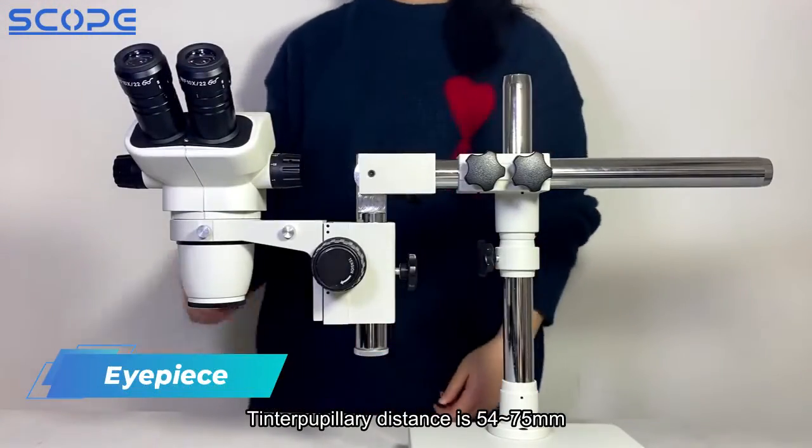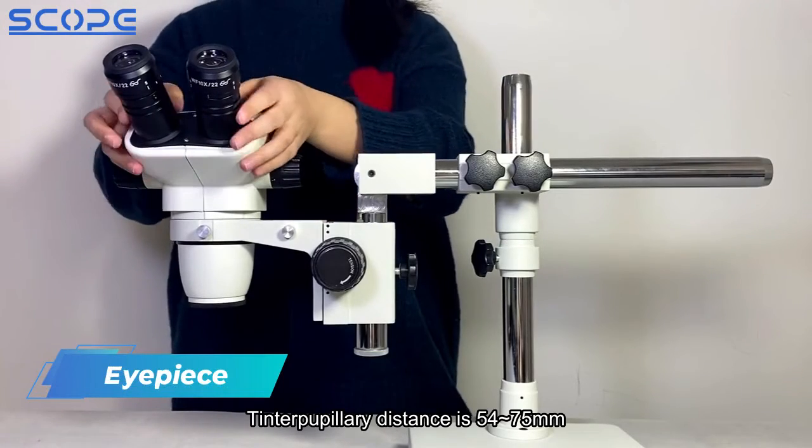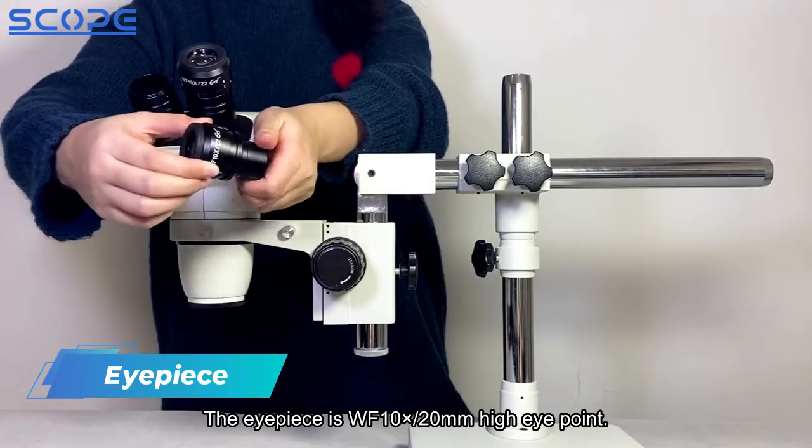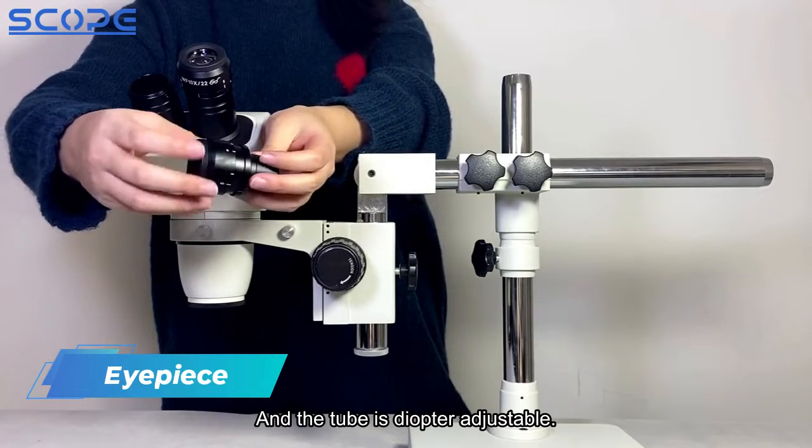Interpupillary distance is 54-75 millimeters. The eyepiece is WF 10x 20mm high eyepoint and the tube is diopter adjustable.